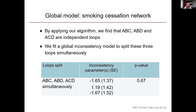Although there are seven possible loops, only three of those loops are independent. By applying our algorithm, we can show that ABC, ABD, and ACD are independent loops. We've then fitted a global model to test for inconsistency within these three loops simultaneously.